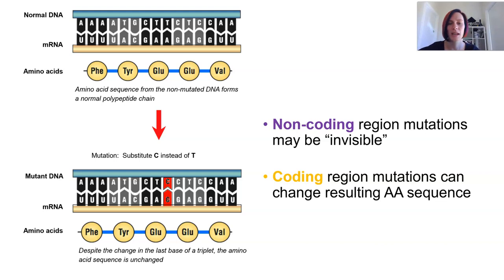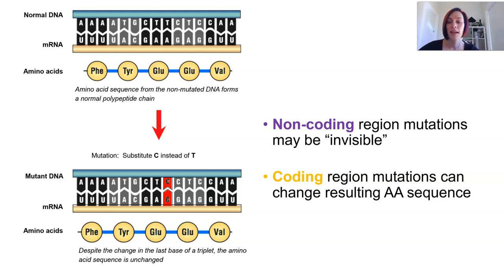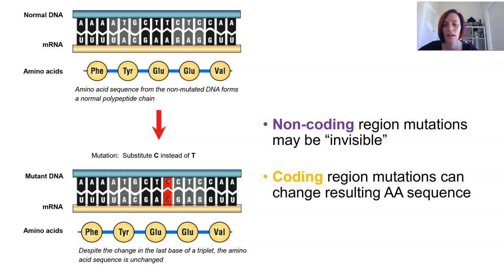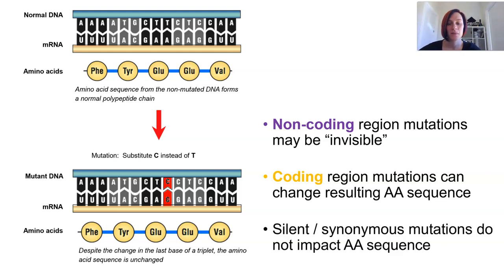It's also possible for a point mutation to lead to no change, because there are many codons which code for the same amino acid. For example, if the DNA base changes from CTT to CTC — as shown on screen — the resultant mRNA will go from GAA to GAG, both of which code for glutamine. This is a silent or synonymous mutation because there's no discernible difference between the original polypeptide and the mutant polypeptide produced.